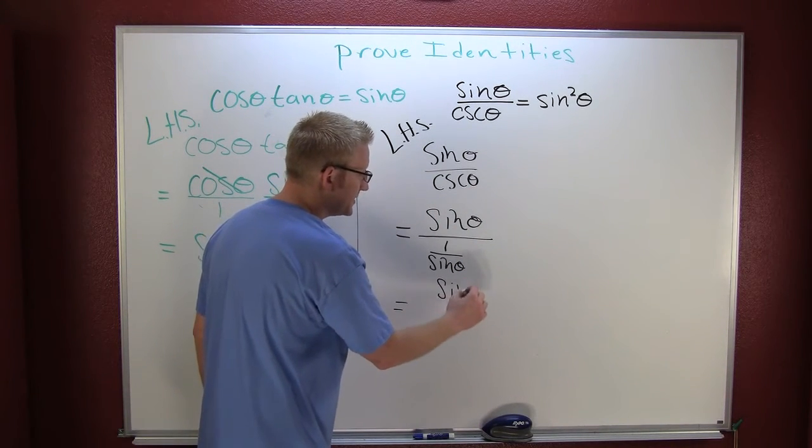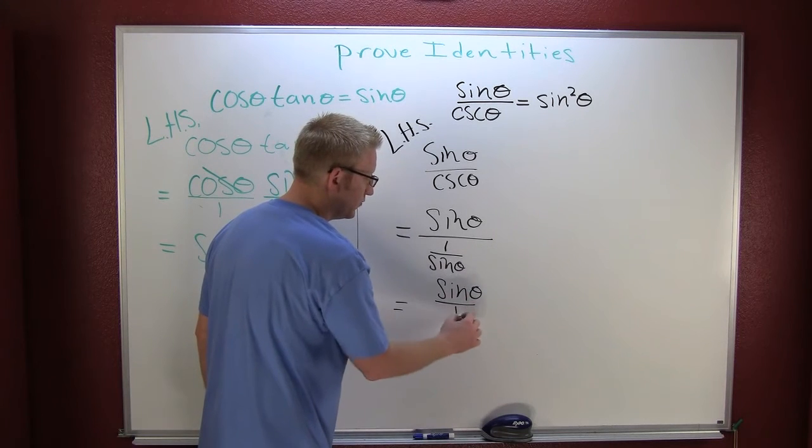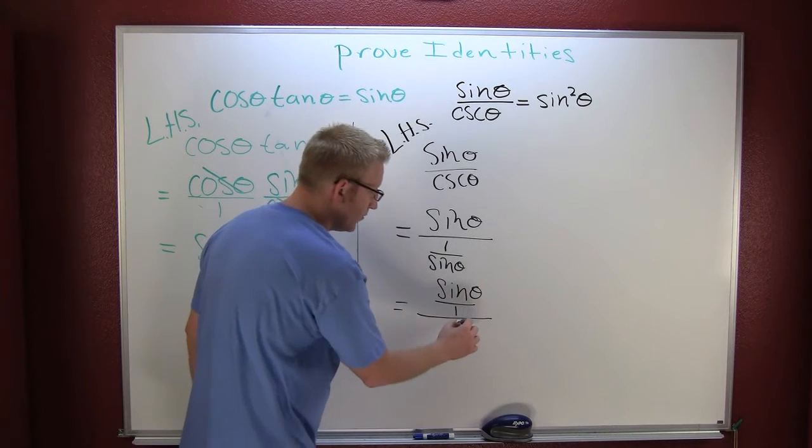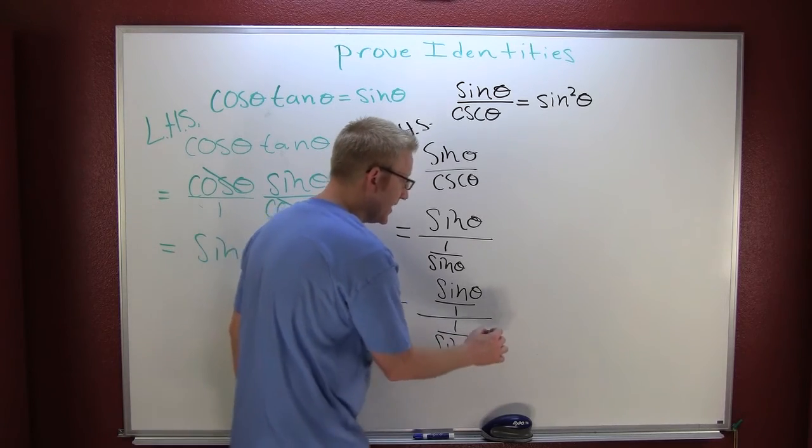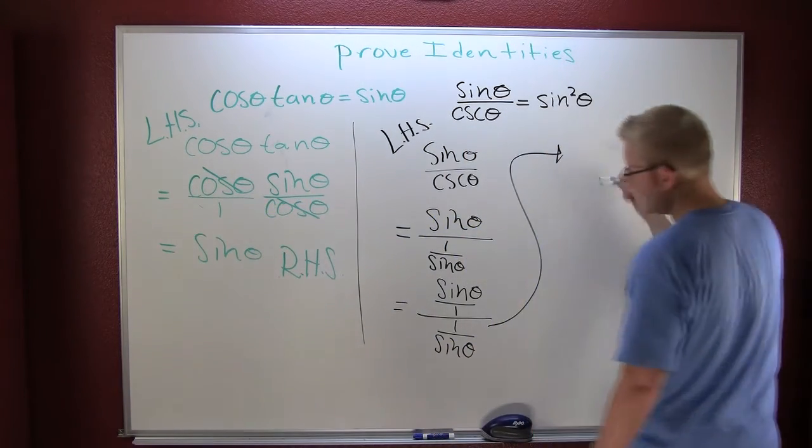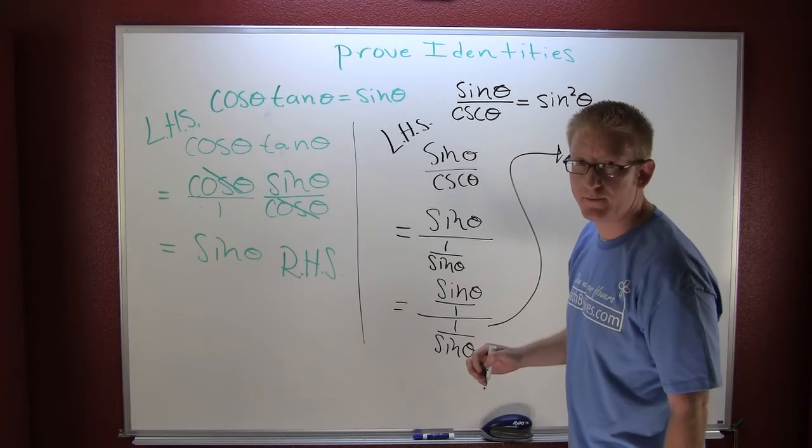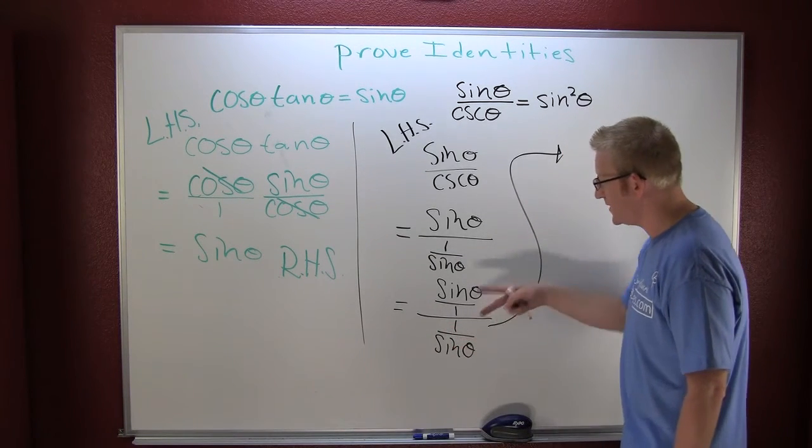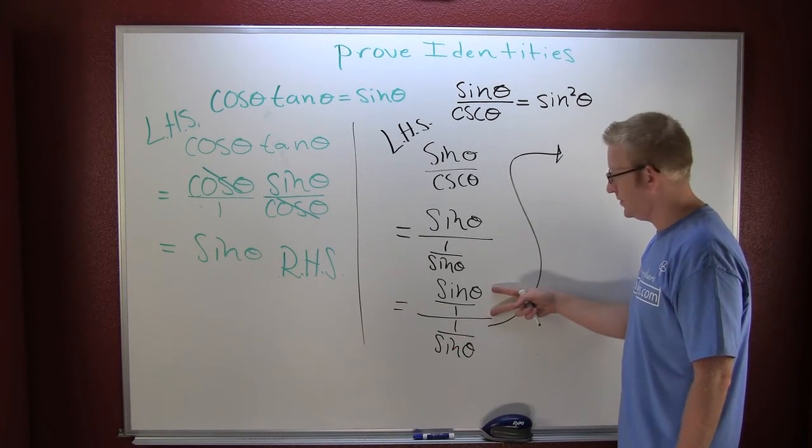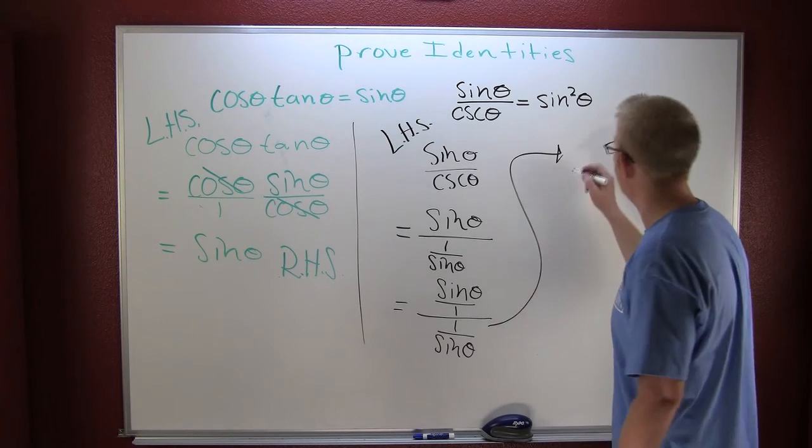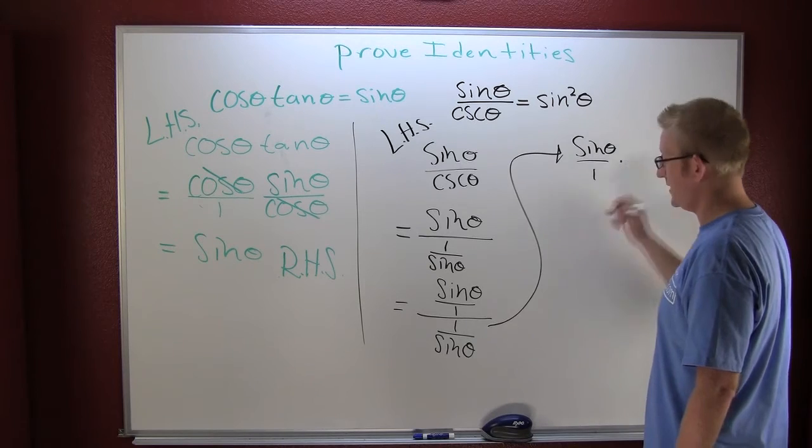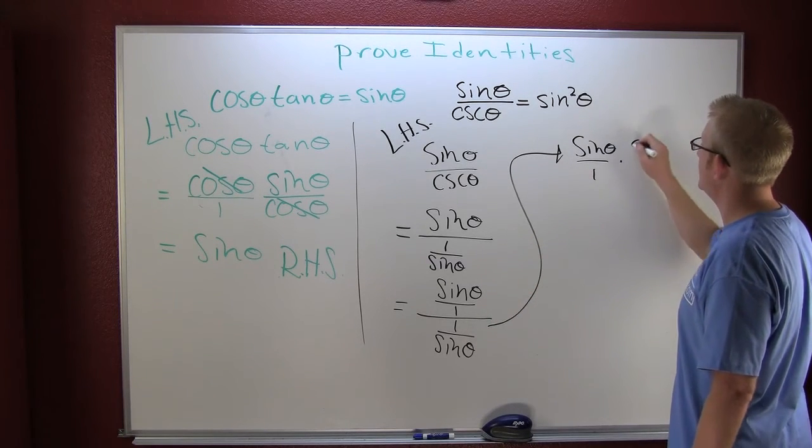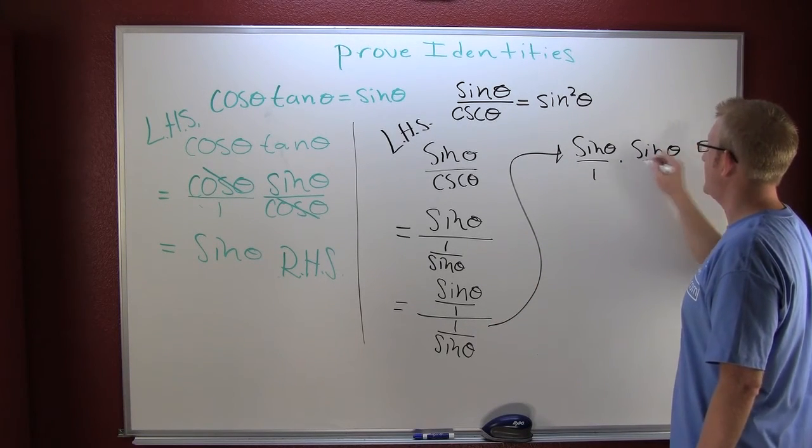If you'd like, this is a fraction in the numerator, that's sine of theta over one, all over one over the sine of theta. You know, dividing by a fraction is the same as multiplying by a reciprocal. You got to flip it before you multiply. This is the sine of theta times the reciprocal of that denominator, which is the sine of theta over one.